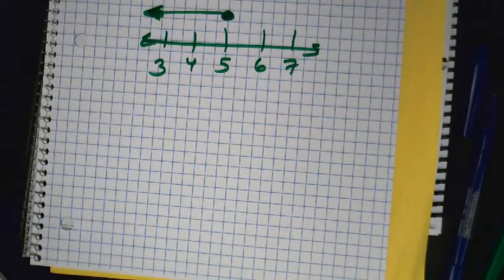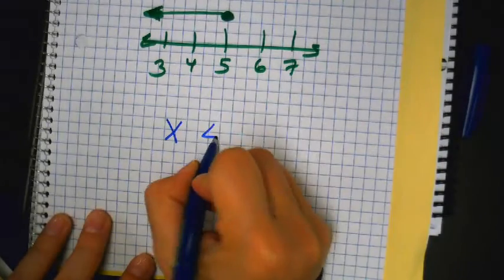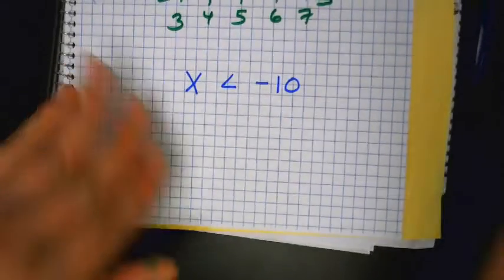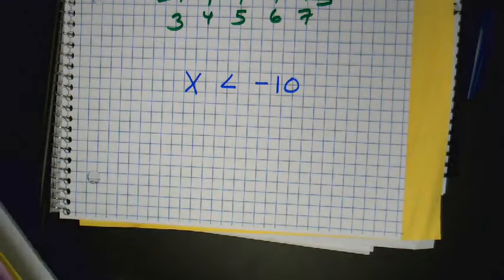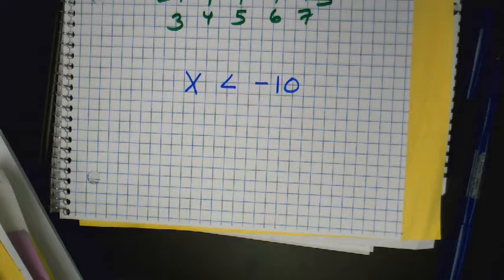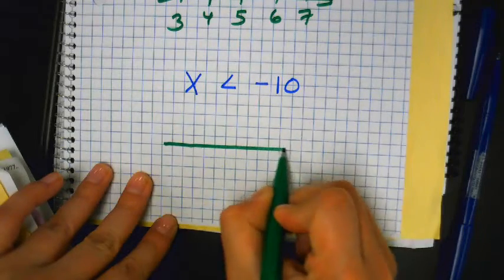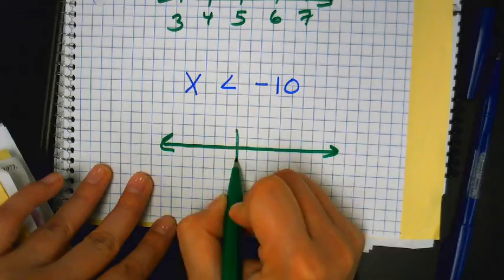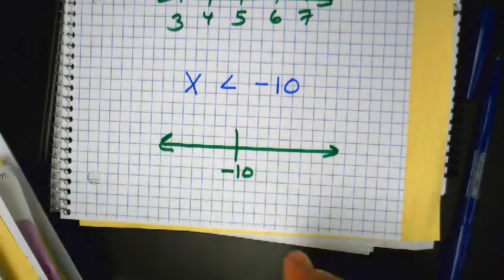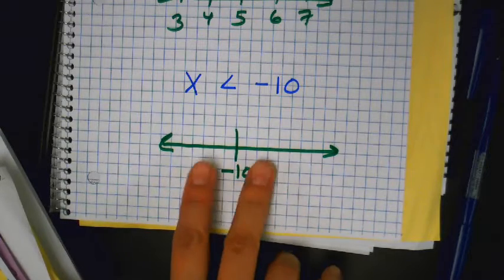The hardest one is when we start dealing with negatives. X is less than negative 10. One mistake right off the bat — kids don't place the numbers on the left and right correctly.